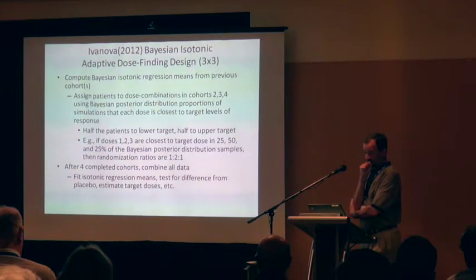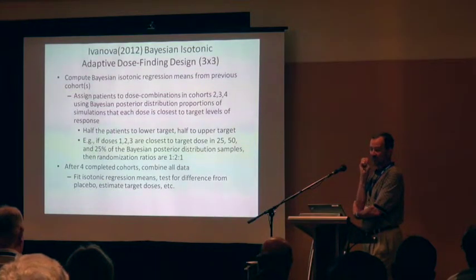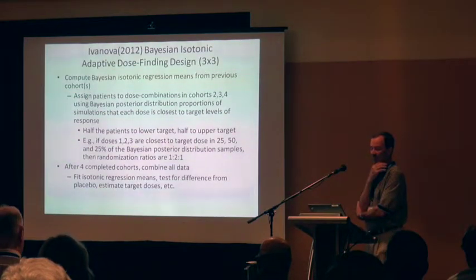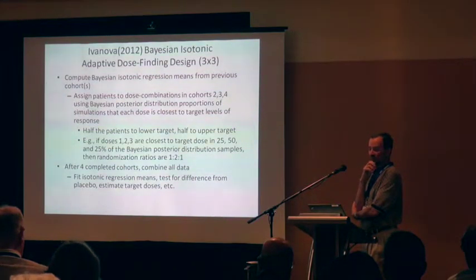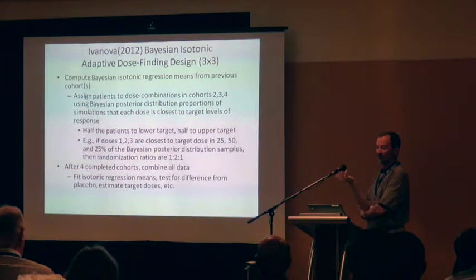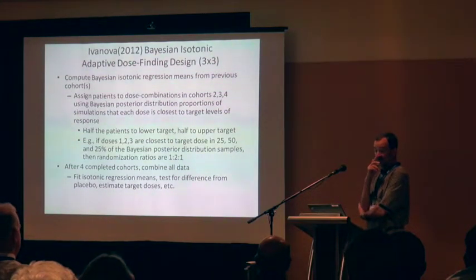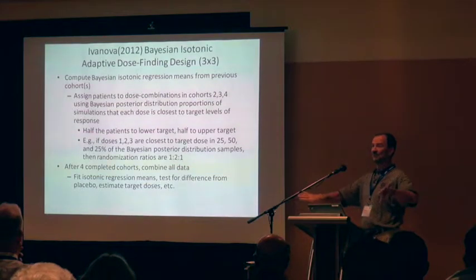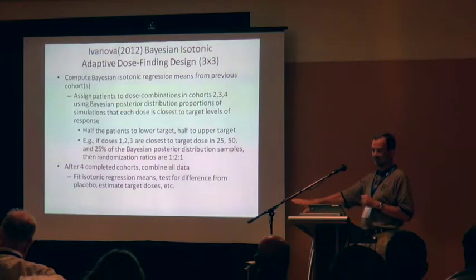Anastasia's design in the 3x3 case computes the Bayesian isotonic regression means from all data in previous cohorts, then assigns patients to dose combinations in subsequent cohorts using the Bayesian posterior distribution — specifically, the proportion of simulations in which each dose was chosen as the dose with the target level of response. Since we had two levels of target response, we took half of each cohort and optimized it for the lower target and the other half for the upper target.